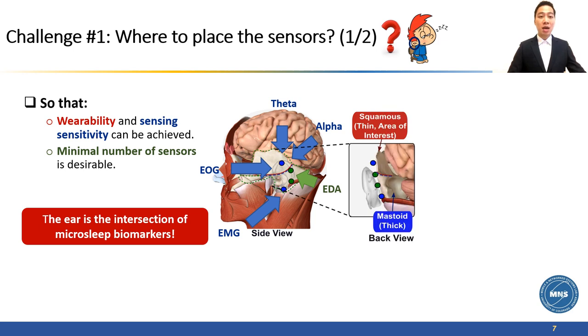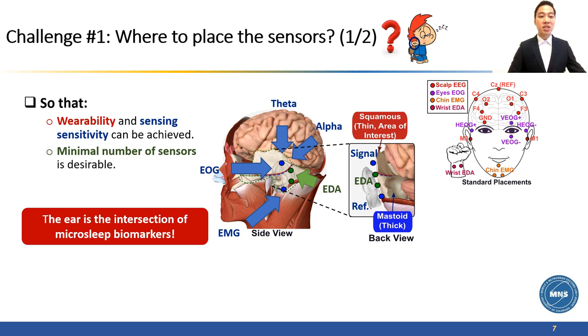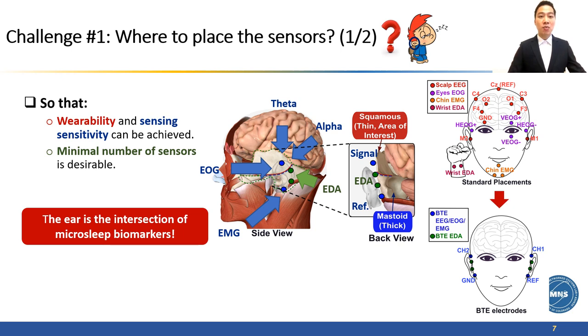If we take a closer look at the temporal bone that covers the area behind the ear, we can see that it has two major parts: the squama and the mastoid. The squama is a thin upper bone. We would want to place a biosignal electrode there so that it can be close to the brain. The mastoid is the thick lower one where we can place the reference to maximize the voltage potential for EEG, EOG, and EMG. EDA can be captured by placing an electrode on the area with high sweat gland density on the back of the ear. With this, we can reduce the need of multiple sensors on the head and face into a small set of sensors behind the ear to achieve wearability.